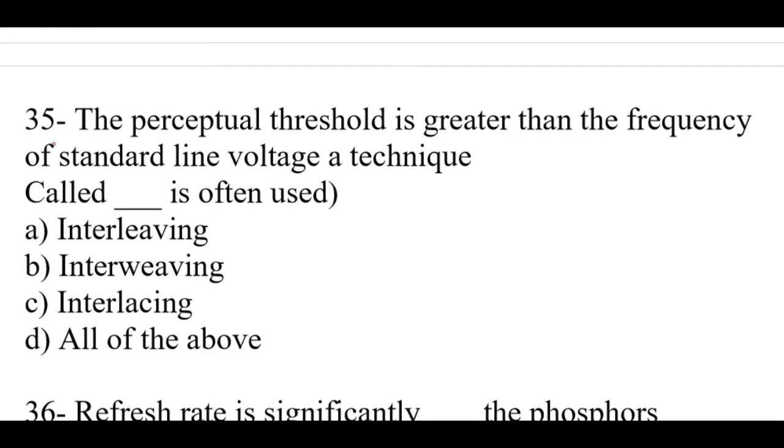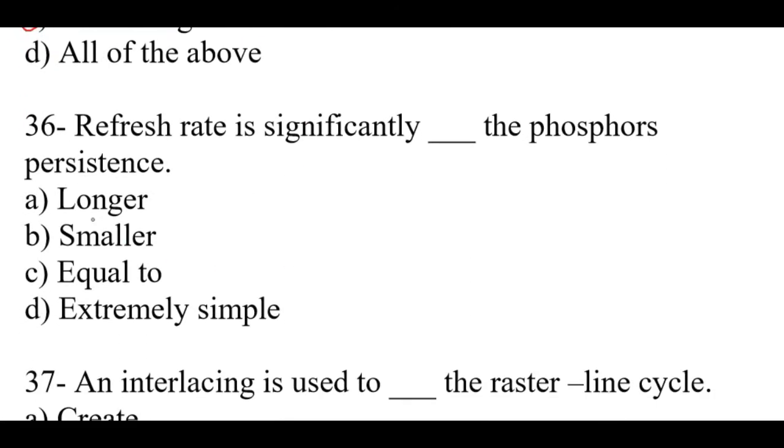Question number 35: The perceptual threshold is greater than the frequency of standard line voltage. A technique called dash is often used. Right option is C, interlacing. Question number 36: Refresh rate is significantly dash the phosphor's persistence. Right option is A, longer.